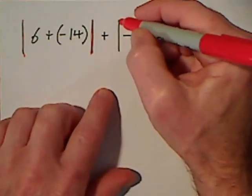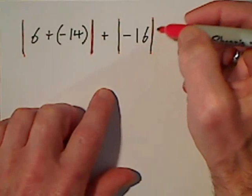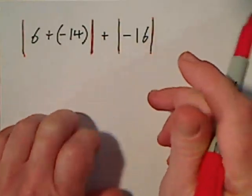Over here we have grouping symbol, absolute value, and I could take the absolute value of negative 16.